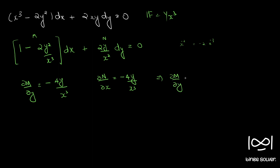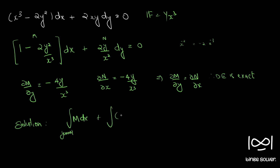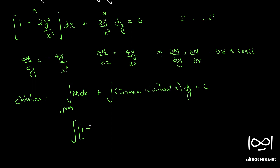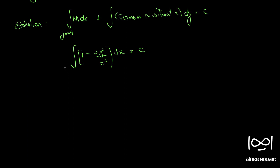Since ∂M/∂y equals ∂N/∂x, this differential equation is now exact. We find the solution as: integral of M dx with y constant, plus the integral of terms in N without x, equal to a constant. So we have the integral of (1 minus 2y²/x³) dx. Taking 2y² outside, integrating x raised to minus 3 gives x raised to minus 2 over minus 2, equal to c.